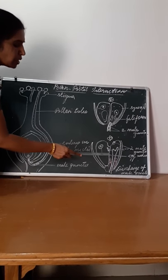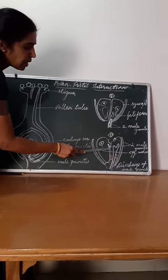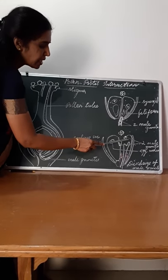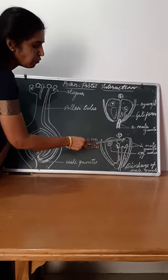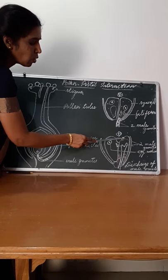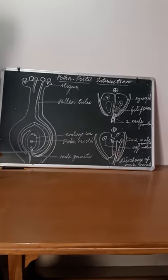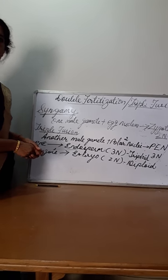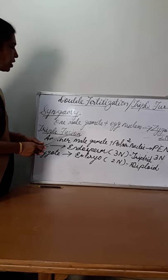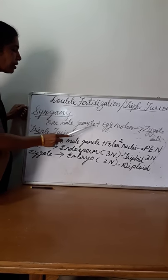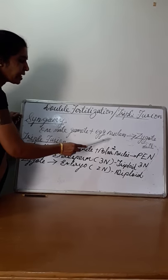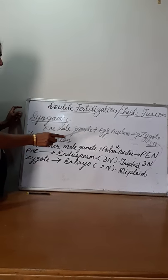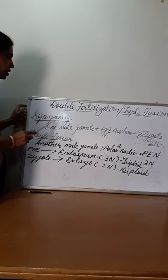One male gamete fuses with the egg nucleus. Two male gametes are released by the pollen tube to the ovule. One male gamete fuses with the egg nucleus and it forms the zygote. That process is known as syngamy.